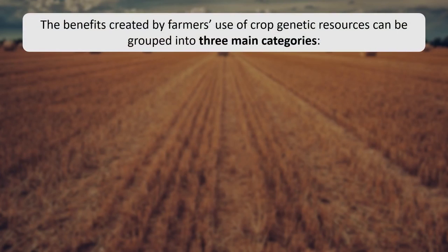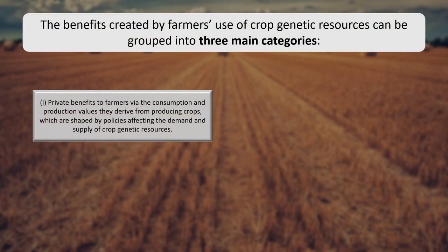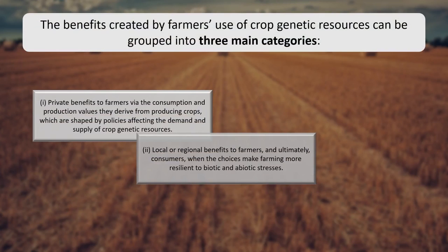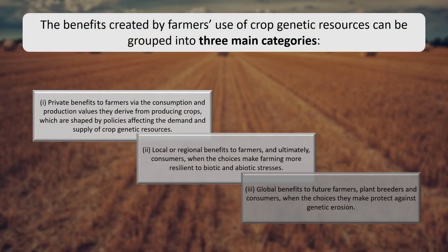The benefits from farmers' use of crop genetic resources can be grouped into three major categories. First, private benefits to farmers via consumption and production values derived from producing crops. Second, local or regional benefits when crop diversity makes farming more resilient to biotic and abiotic stresses. Third, global benefits to future farmers, plant breeders, and consumers when crop diversity protects against genetic erosion. Farmers' choices for their own private benefit may also provide local and global public goods of resilient conservation — though conflicts exist, such as when crop specialization generates high private benefits but reduces local resilience, or when on-farm conservation of globally important genetic resources reduces farm profits.